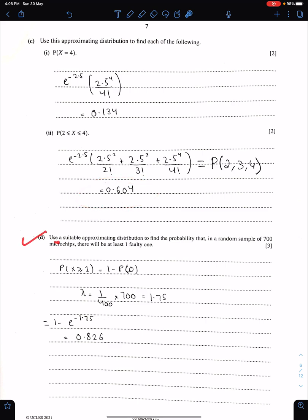Part D: Use a suitable approximating distribution, still Poisson. Find the probability that in a random sample of 700, now N is 700. Therefore, P will be 700 upon 400, which is 1.75. At least 1 means this thing. There will be at least 1. At least 1 is 1 minus P0. Here is the probability. The answer should be up to three significant figures.